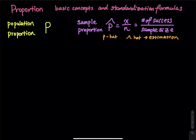There is an angle right above the p that is called hat, so p-hat. In statistics, the hat means estimation. Since sample is an estimation of the population, for sample proportion we put a hat on top of p. The sample proportion equals x divided by n, which is the number of successes divided by the sample size.